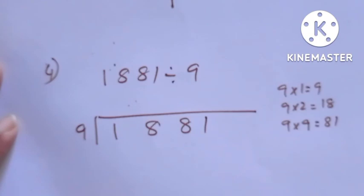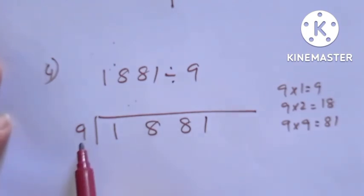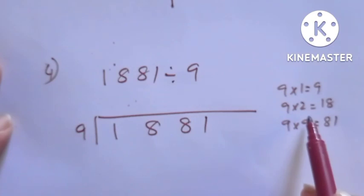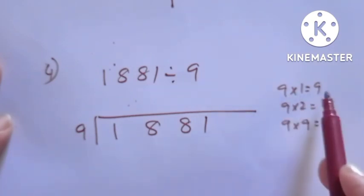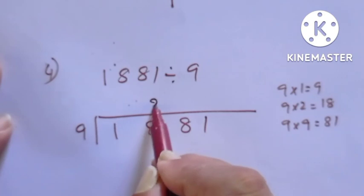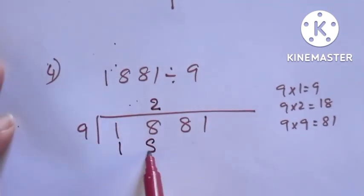The next and last question is 1881 divided by 9. Taking the leftmost digit, that is 1. Since 1 is less than 9, we take the first 2 digits together. The number is 18. In the 9 times table, 9 twos are 18, so we write 2 in the quotient. 9 into 2 is 18. We write 18 below.